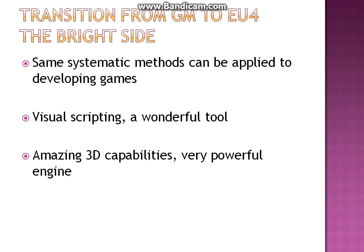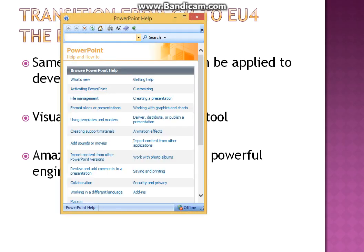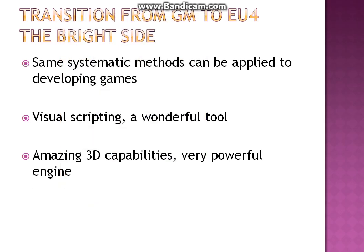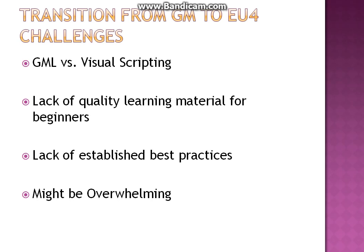Another thing I wanted to mention is the capabilities of the engine. If you are into making 3D games, you should absolutely move to Unreal Engine 4, because GameMaker Studio has some 3D capabilities but they're very limited. Unreal Engine 4 is a very, very powerful engine — the graphics are amazing. And if you want to make virtual reality like Oculus Rift stuff, this is the way to go. I feel like with Unreal Engine 4, sky is the limit — it's just your imagination that is limiting you.